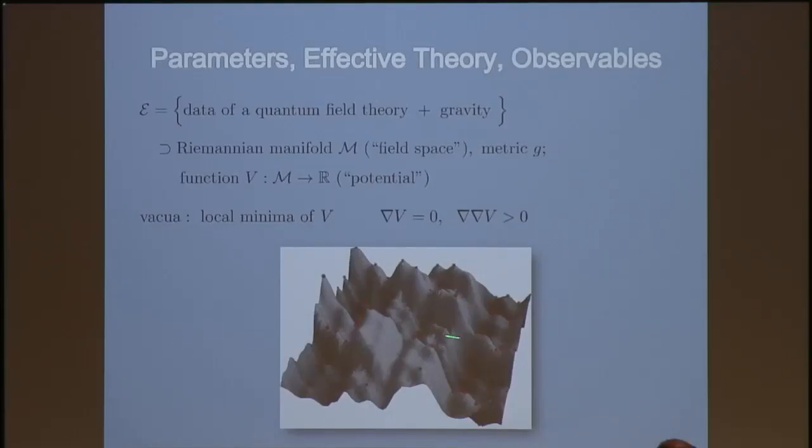What I mean by the data of a quantum field theory, well, it has lots, but the part that we need to think about now is includes the data of a Riemannian manifold called the field space with some metric, and a function from the field space to the reals, which is the potential. This is the measure of the energy density of the system if the fields find themselves at a particular point in the field space. Now, the vacuum we're going to think about are the local minima of this potential. So some of these red dots are maxima, but inside you can see some minima too. Local minima, so the gradient zero and the Hessian matrix of double derivatives is a positive matrix. Sorry, when you say field space, that's space of fields? Correct. So you're talking about an infinite dimensional manifold. No, this is the space whose local coordinates are the finite number of fields in the theory. So for example, if you had a theory of five real scalars, then the field space would just be a five manifold, the Riemannian five manifold.